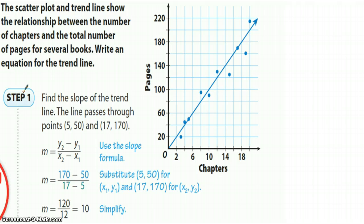Well, the author sort of walks us through it, and let's take a look at his example. So it says the scatterplot and trend line shows the relationship between the number of chapters, which is on our x-axis, and the total number of pages for several books. So it asks us to write an equation for the trend line. The trend line has already been constructed, and they ask us what is the equation of this trend line. What we're going to do with this trend line is we're going to try to find the slope. And remember, the slope formula says the second value of y minus the first value of y divided by the second value of x minus the first value of x.